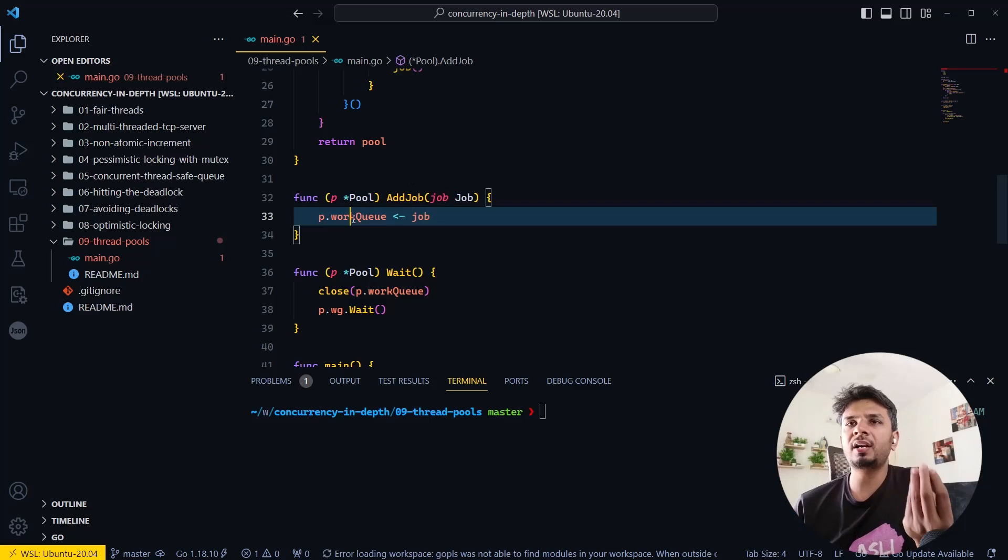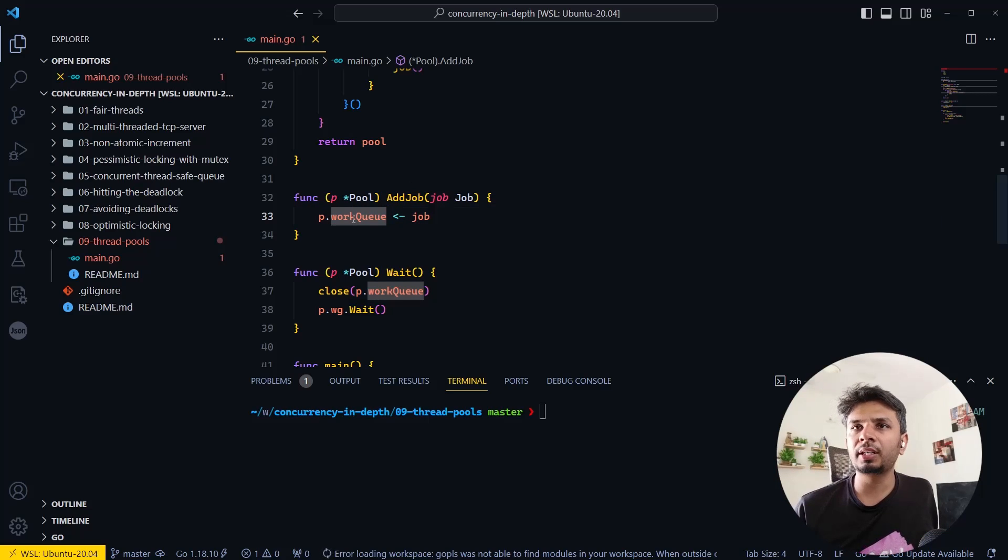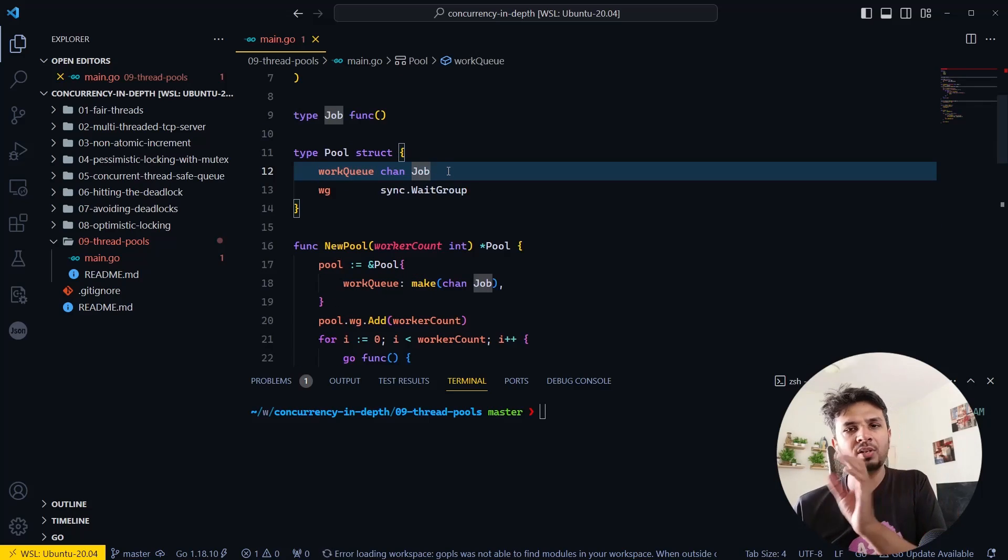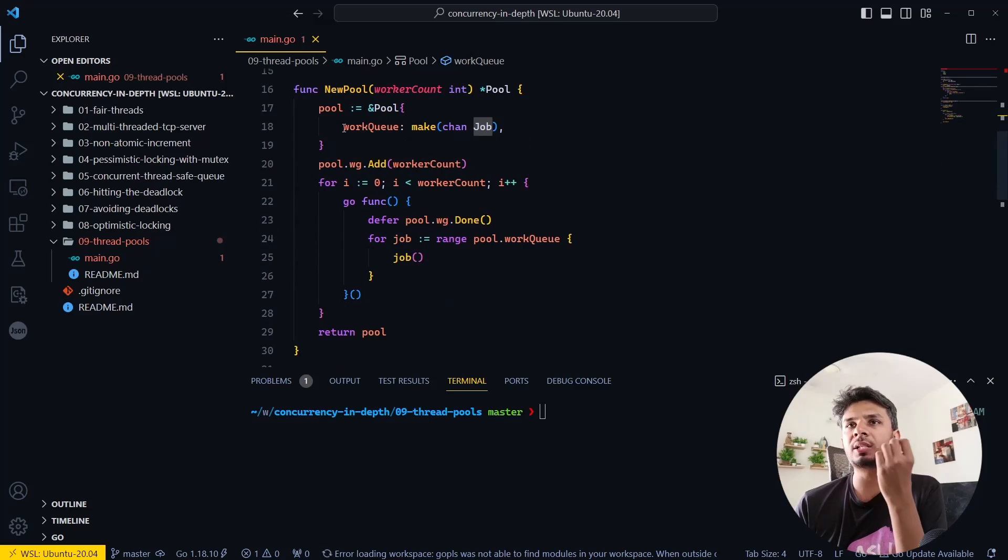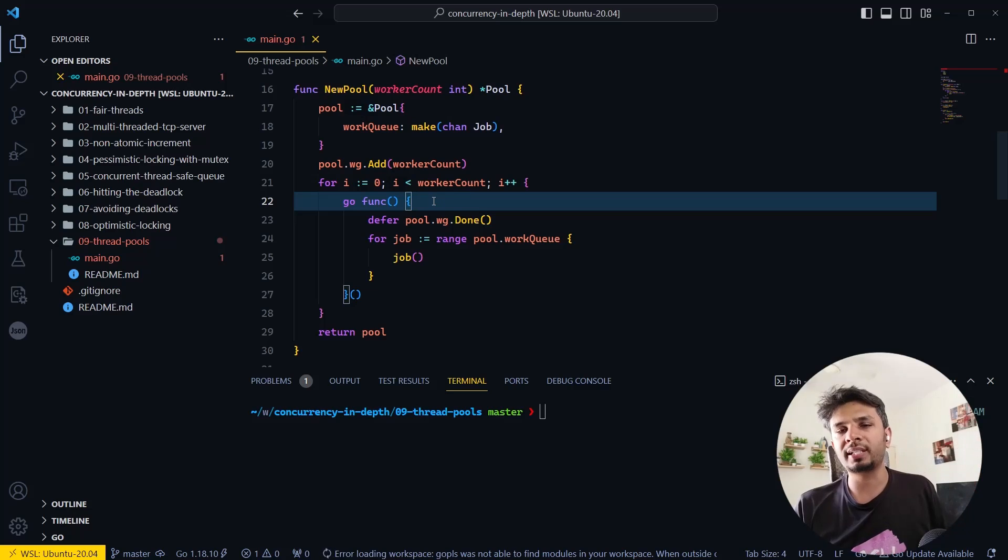When I do this add_job, it basically adds the job - the function that needs to be executed - into a work queue. This work queue is basically a simple Go channel. Think of it as a blocking queue. It's a Go channel in which I'm adding those many goroutines (basically threads).